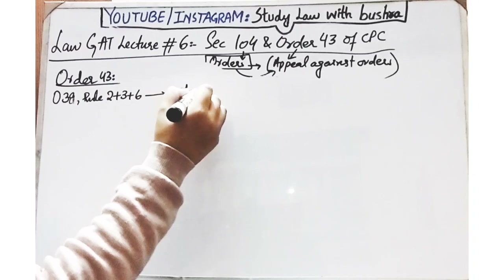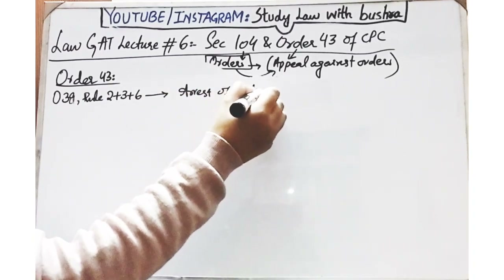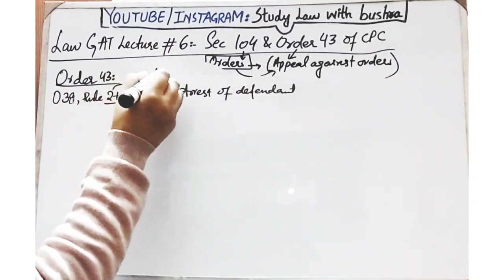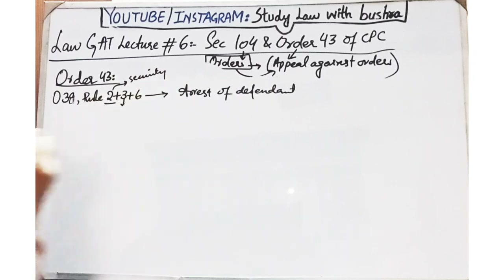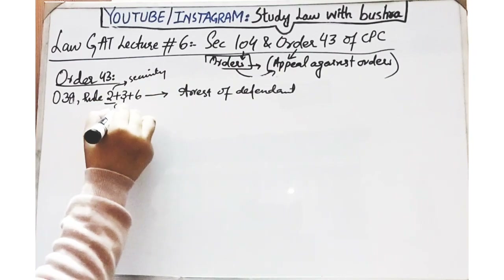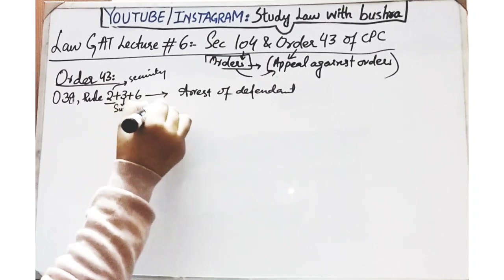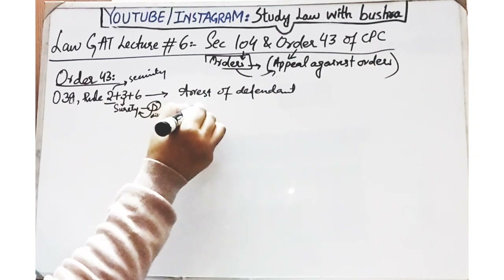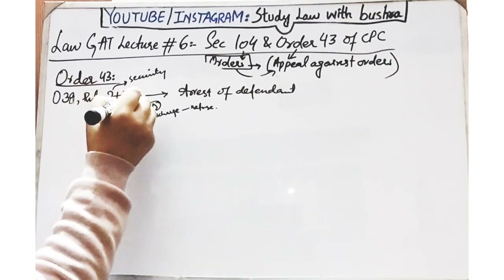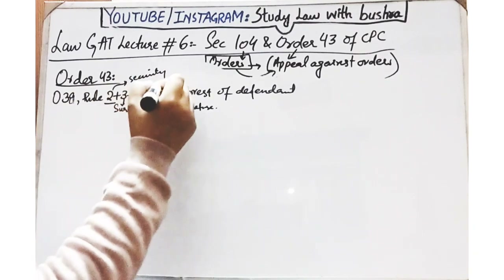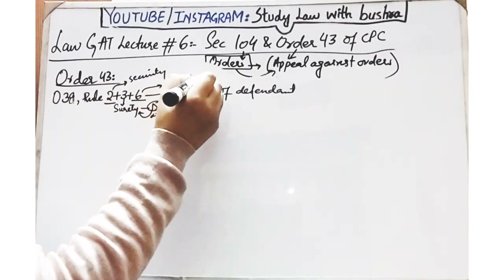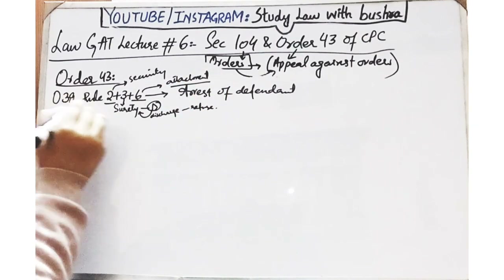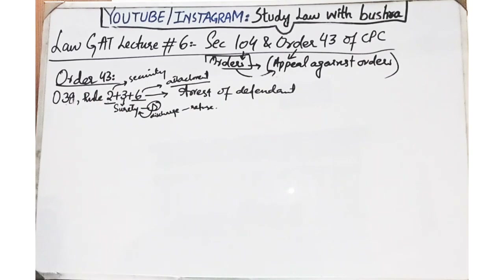Order 38 Rules 2, 3 aur 6 - agar court defendant se koi security demand kar rahi hai, aur Rule 3 mein yeh kaha gaya hai ke agar defendant ka koi surety aakar yeh kehta hai ke mujhe meri suretyship se discharge kar diya jae, aur court yeh cheez refuse kar deti hai, to us refusal ke against bhi aap appeal file kar sakte ho. Order 38 ka Rule 6 basically attachment of the property se deal kar raha hai. To aisi surat mein bhi aap appeal file kar sakte ho.